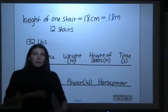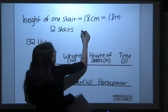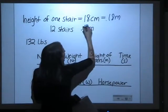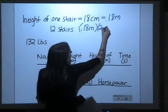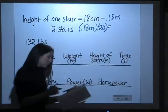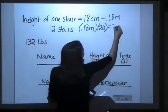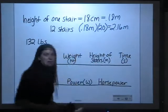There were 12 stairs, so to figure out the entire vertical height, you'll have to take 0.18 meters, multiply that by 20 stairs, and that will give you a total vertical height of 2.16 meters.